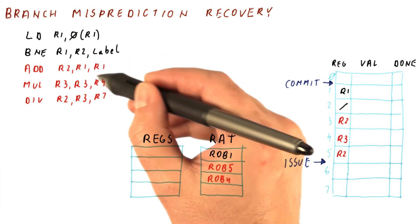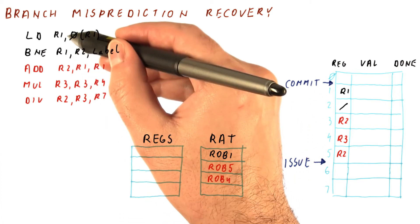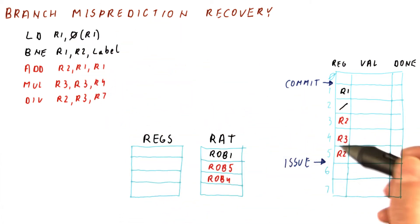But this multiply here can begin because R3 and R4 are not produced by any of these instructions. So this multiply might produce a value, for example, 15.